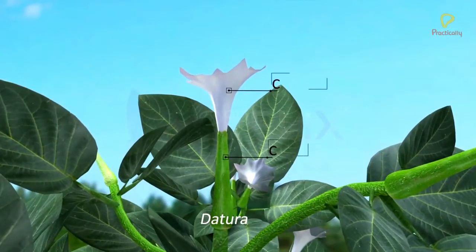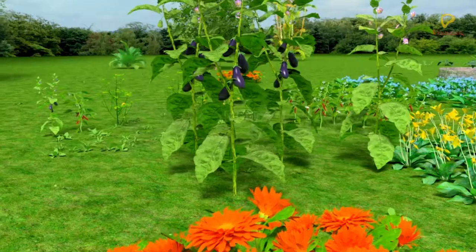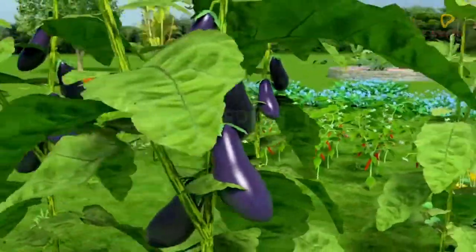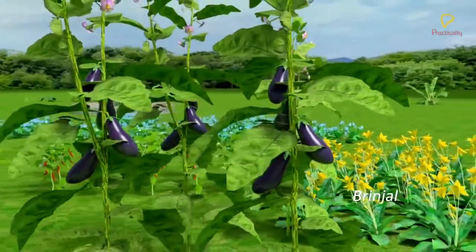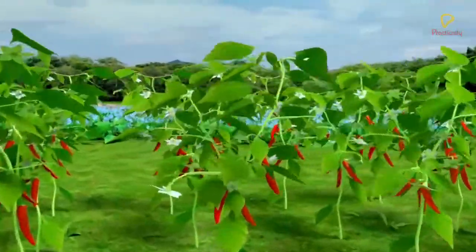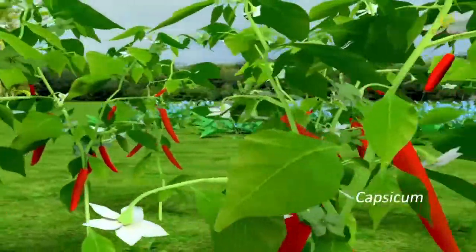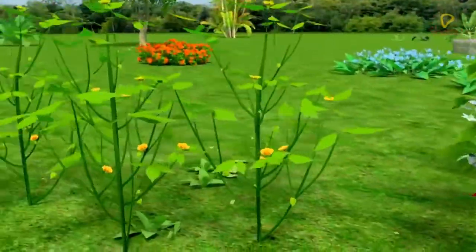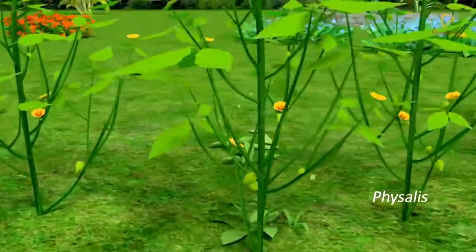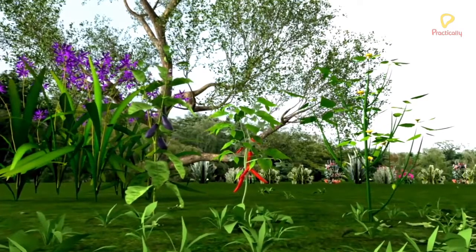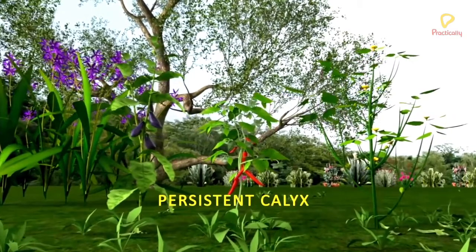Generally, the members of the calyx fall off after fertilization. But in the members of brinjal, capsicum, and Physalis, the calyx remains attached even after fruit formation. That calyx is called persistent calyx.